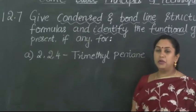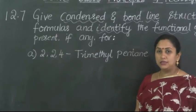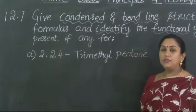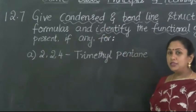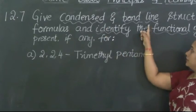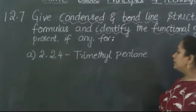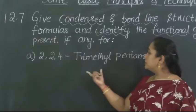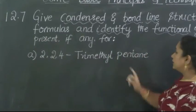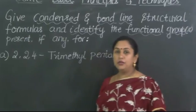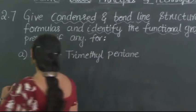What we shall do is first write the expanded form of this structure. Based on that we will be able to write the condensed formula, and based on that we will also be able to write the bond-line formula. As we can see in the structure, the substituent group given to us is methyl — that is the alkyl group which is present. Now let us start doing this step by step.